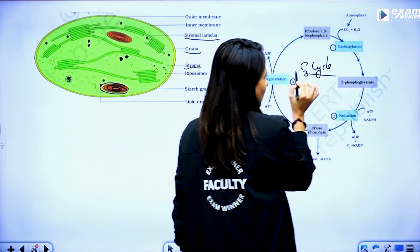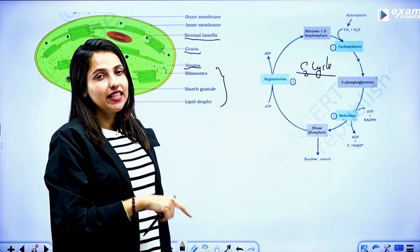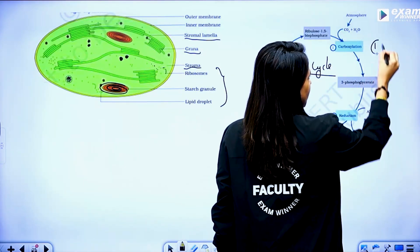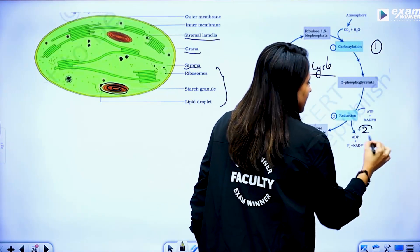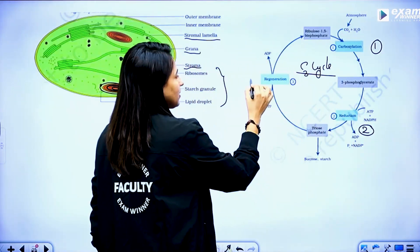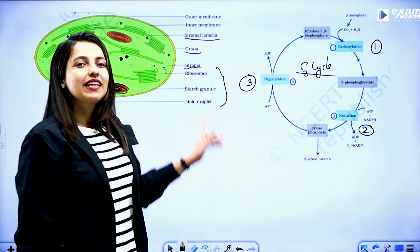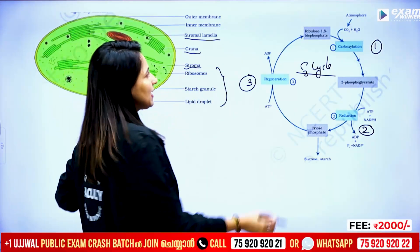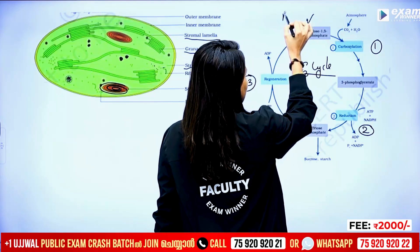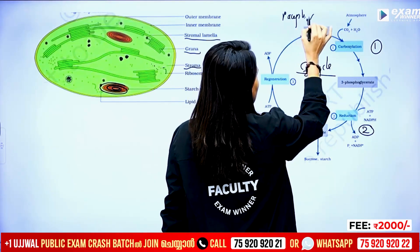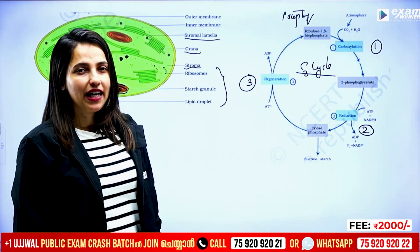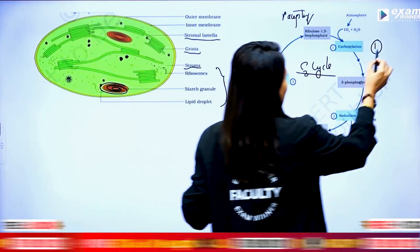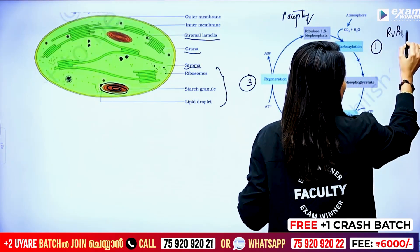This is the diagram of the C3 cycle — a flow cycle. First step: carboxylation. Second step: reduction. Third step: regeneration. The enzyme involved.